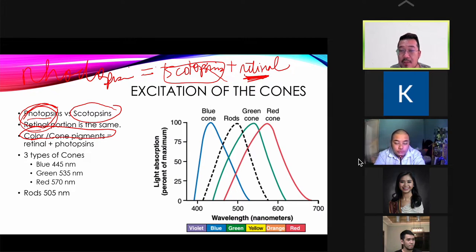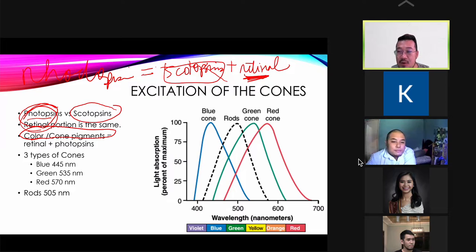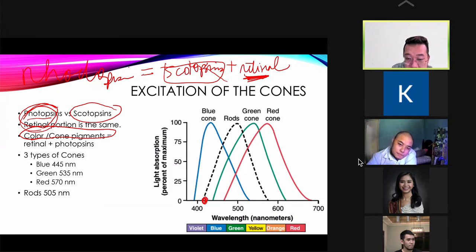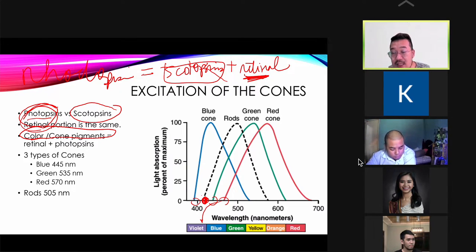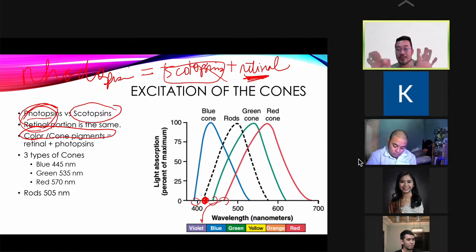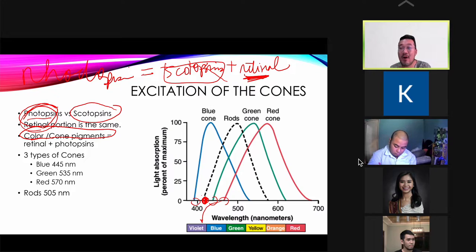We only have three types of color cones: blue, green, and red. There are no purple, violet, or teal cones. How do we see violet? It is a combination — stimulating a certain wavelength activates a little bit of red, a little bit of green, and blue in the right ratio to give you violet. It is the ratio of excitation of the different cones that gives you all the different shades of colors.